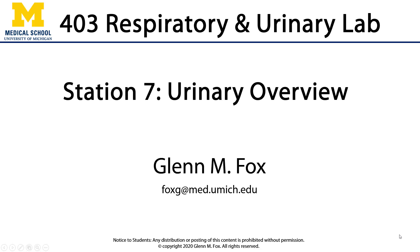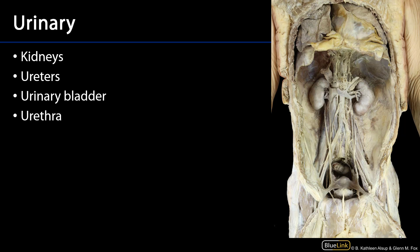Hi! Let's look at an overview of the urinary system. The urinary system largely exists either retro or subperitoneally, and there are bilaterally paired kidneys which serve as the dynamic filters of blood. They convert blood into filtrate, and through the processes of tubular resorption and secretion, that filtrate eventually becomes urine.